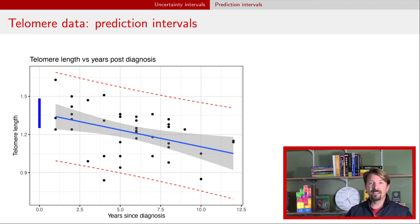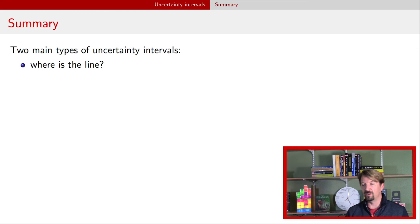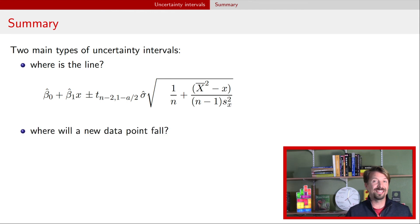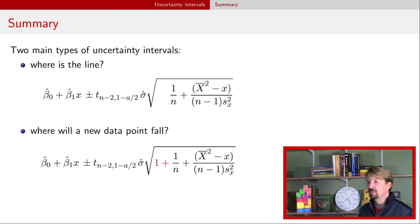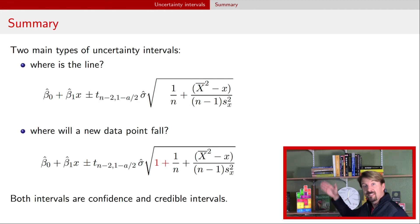So that's the idea of both uncertainty and prediction intervals within the context of regression. Those two intervals: the first one, the uncertainty interval, which is typically referred to as a confidence interval, but again it's also a credible interval, is distinct from the prediction interval. What that says is, where is the line? Then we have the second type of interval, which is asking where will a new data point fall? Both of these intervals are actually confidence and credible intervals.